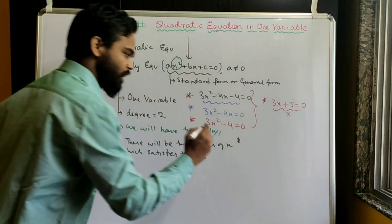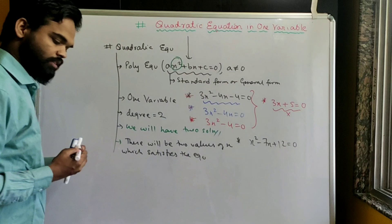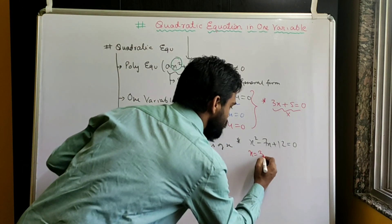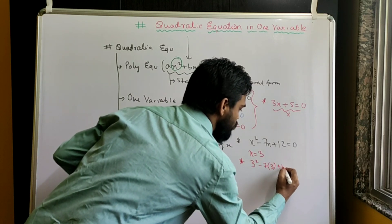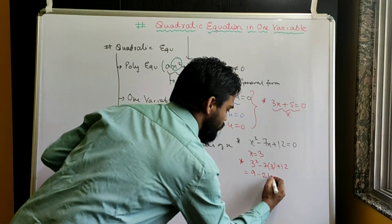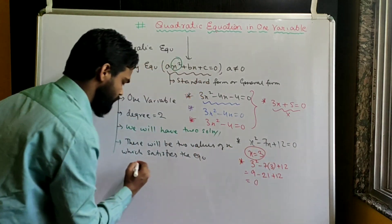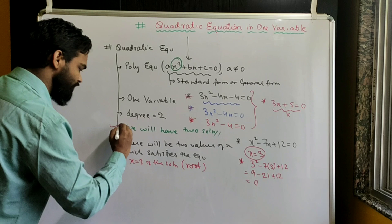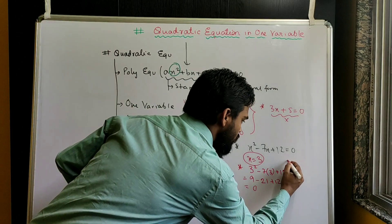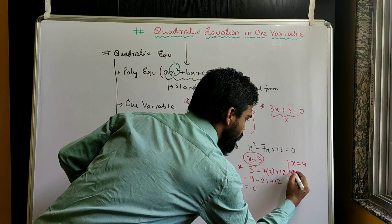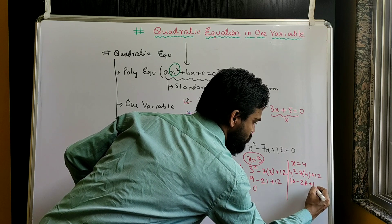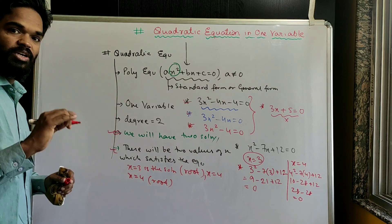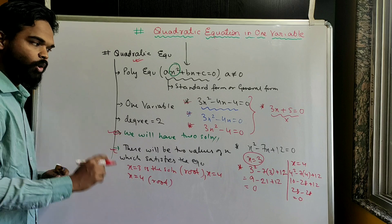For example, take x² - 7x + 12 = 0. Put x = 3: 3² - 7×3 + 12 = 9 - 21 + 12 = 0. So x = 3 is a solution, also known as a root of the equation. Now put x = 4: 4² - 7×4 + 12 = 16 - 28 + 12 = 0. So x = 4 is also a root. There are two roots and both satisfy the equation.